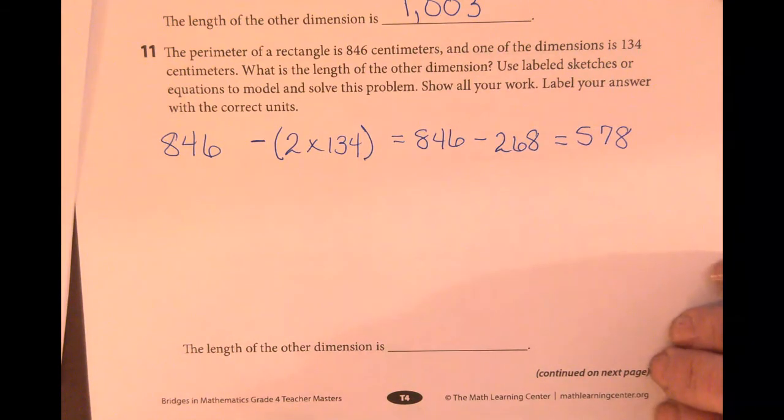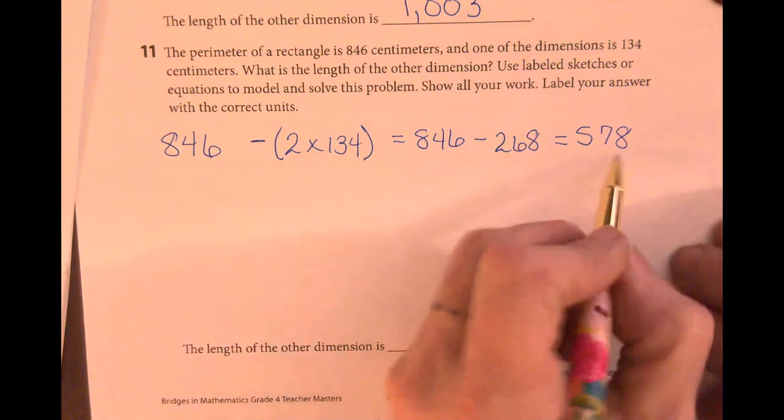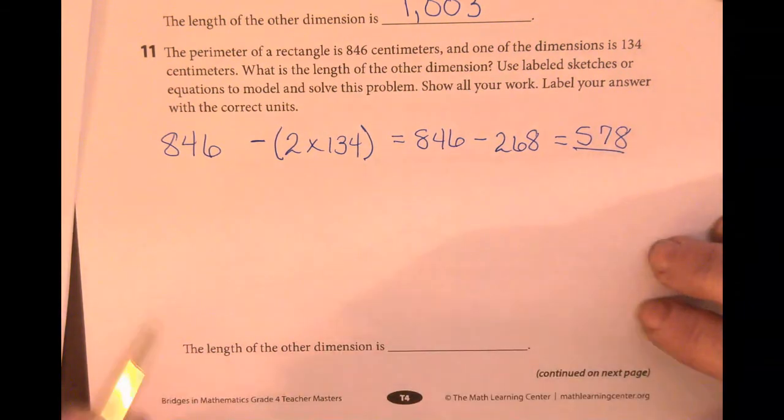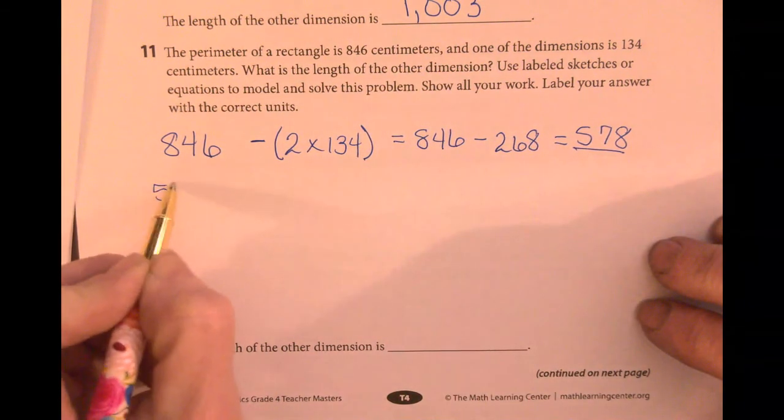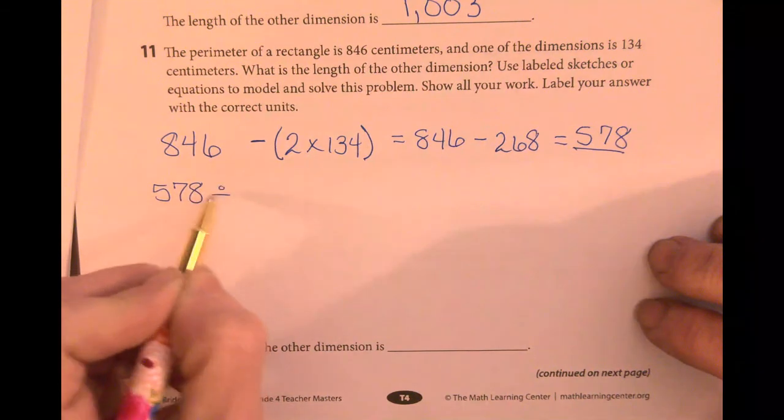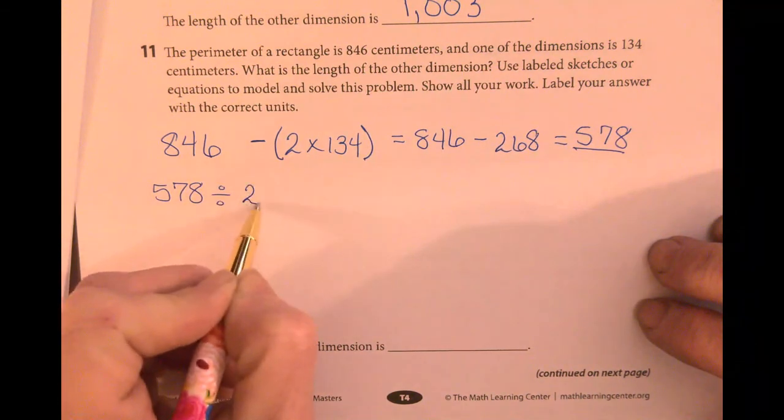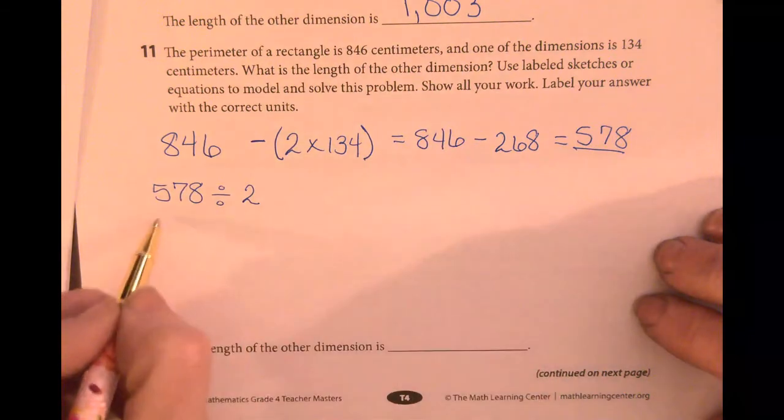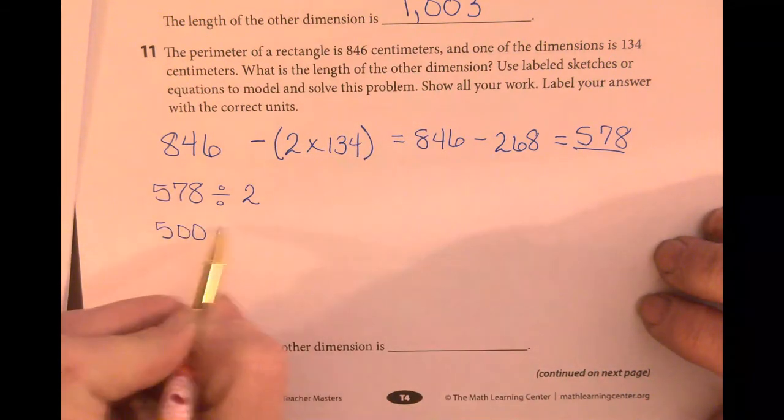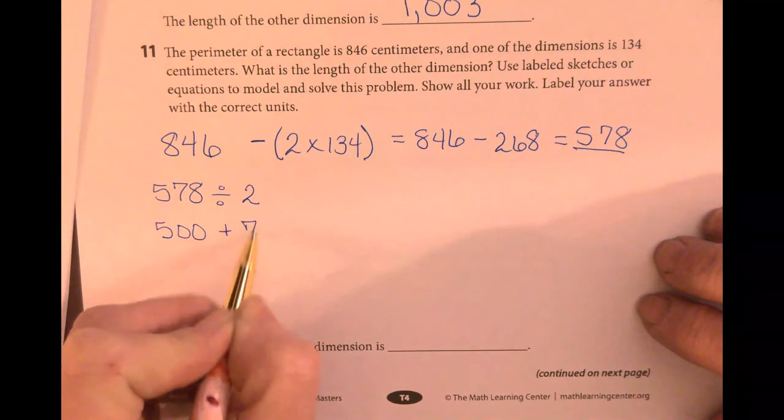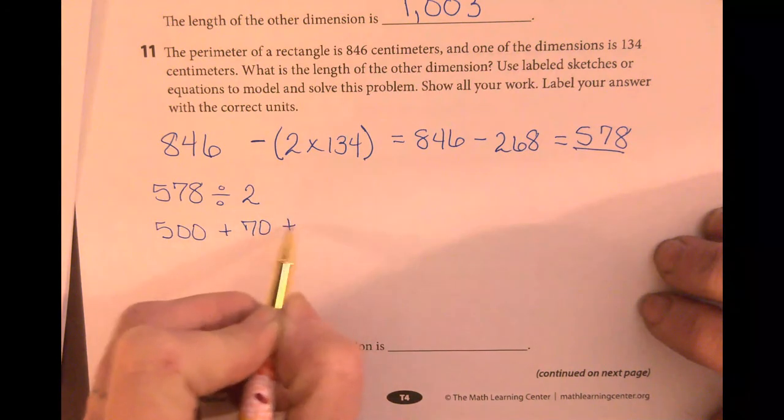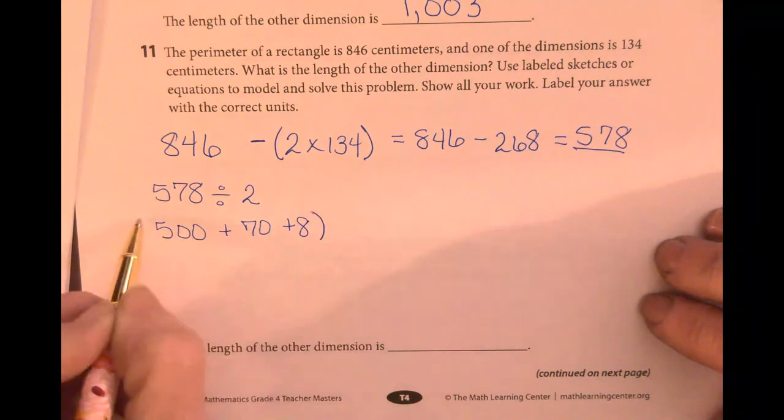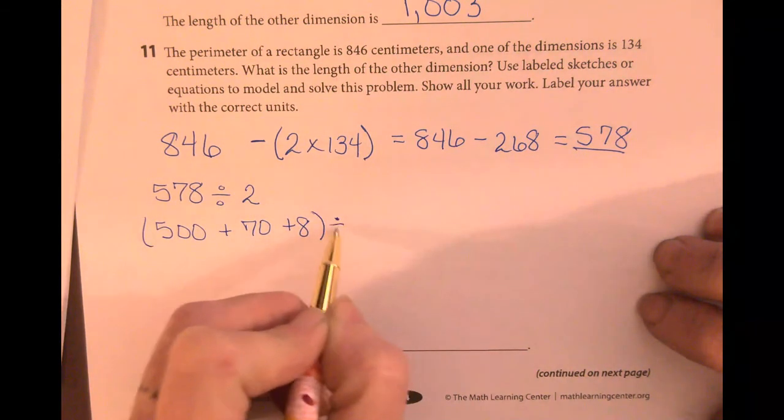The difference is the total of the other two sides that we don't know. So when you divide that difference by 2, you can break it down to be 500 plus 70 plus 8, all divided by 2.